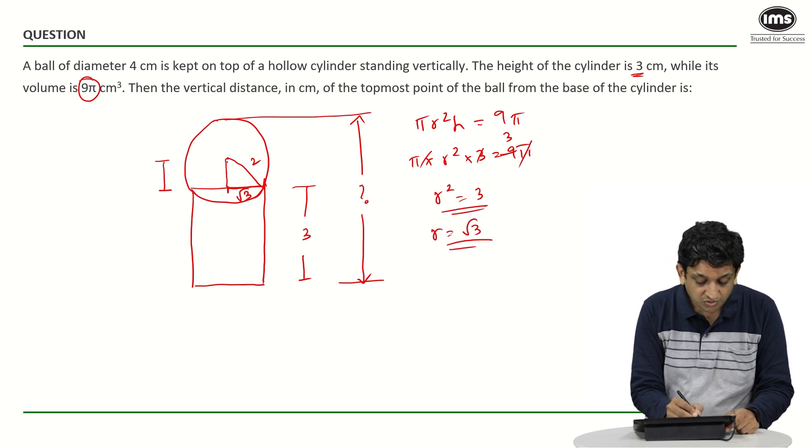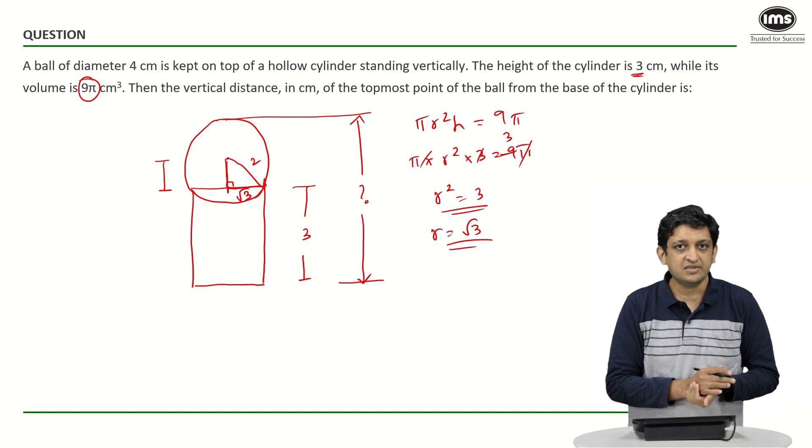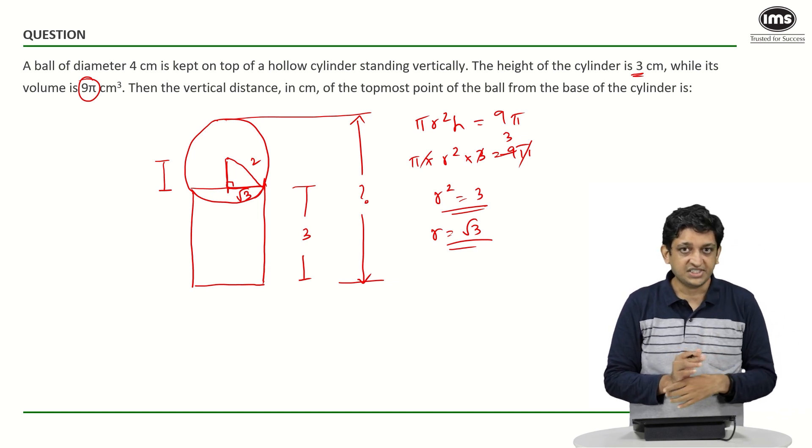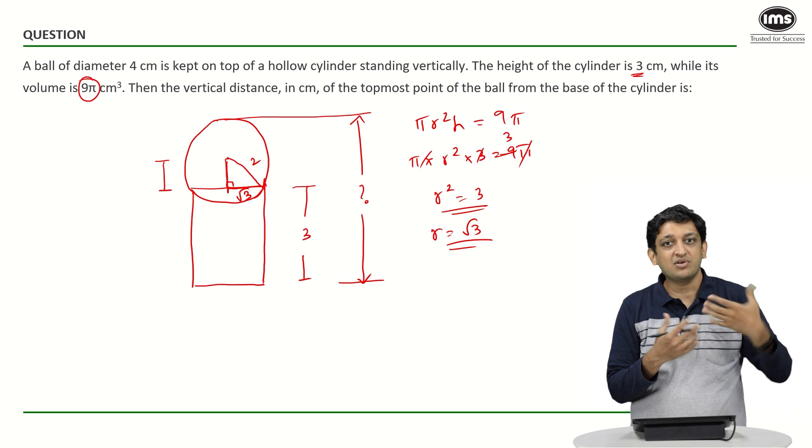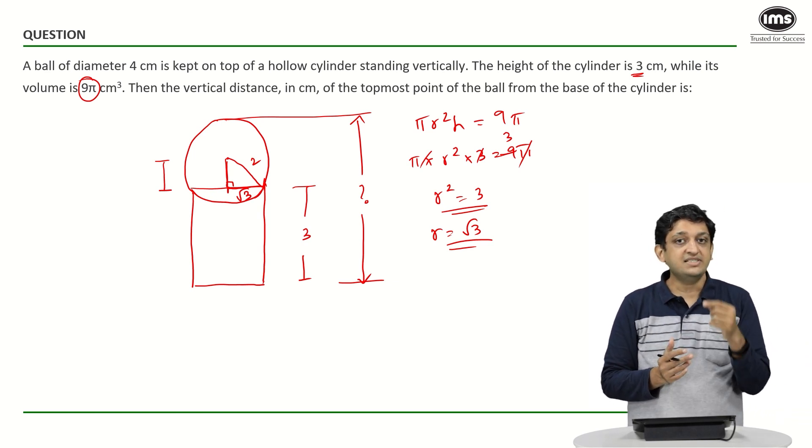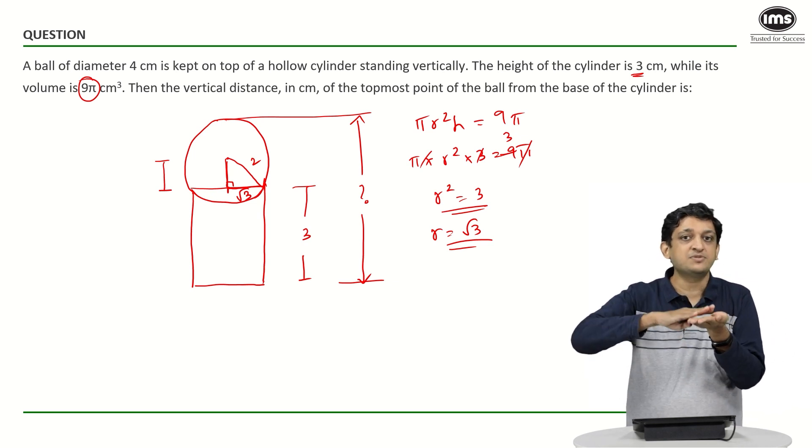Now if I join these two points I know that it is basically going to be the perpendicular bisector because it is basically a circle that we have if you look at the cross section and it is placed rightly on top of a right circular cylinder it essentially means that we are going to drop a perpendicular from the centre of the sphere to the centre of the circle at the top surface of the cylinder.